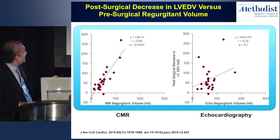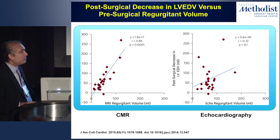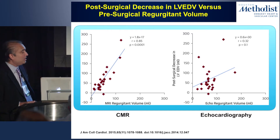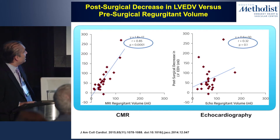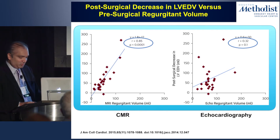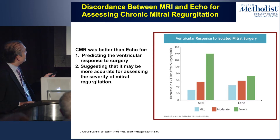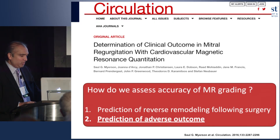A study published in JACC last year examined the magnitude of reverse remodeling after mitral valve repair and showed that baseline mitral regurgitation volume by CMR correlated tightly with the degree of LV reverse remodeling seen at approximately six months post-surgery. This correlation was tighter for CMR-derived MR volume assessment than for echocardiographic MR assessment, leading the authors to conclude that CMR is very good at predicting ventricular response to surgery — serving as a surrogate for accuracy of MR severity assessment.